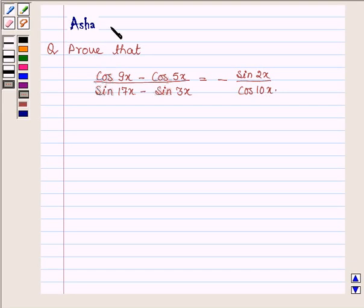Hello and welcome to the session. I am Asha and I am going to help you with the following question which says prove that cos 9x minus cos 5x upon sin 17x minus sin 3x is equal to minus sin 2x upon cos 10x.